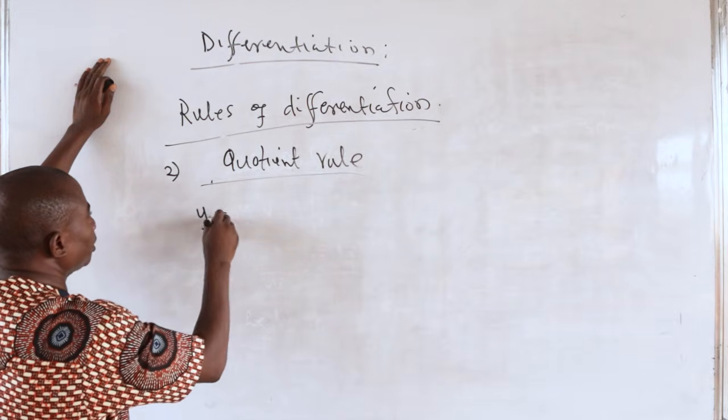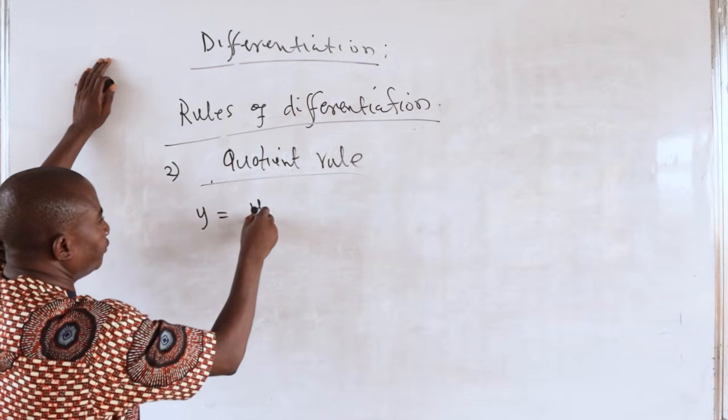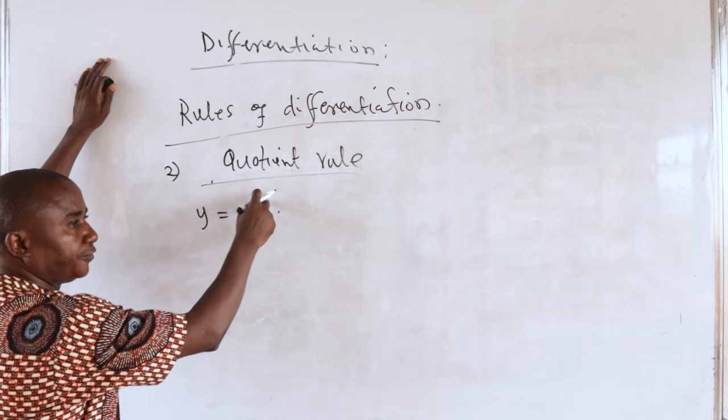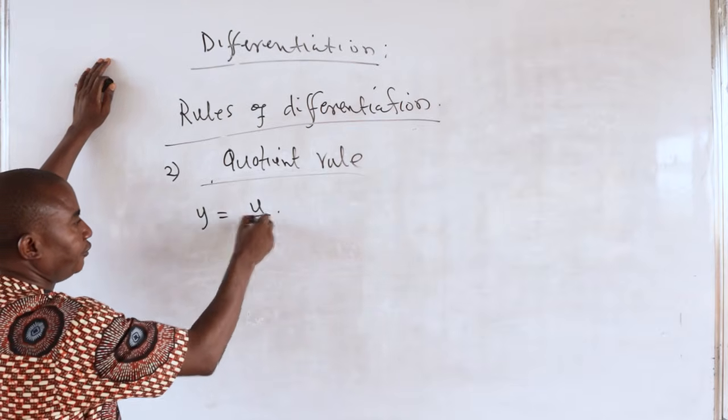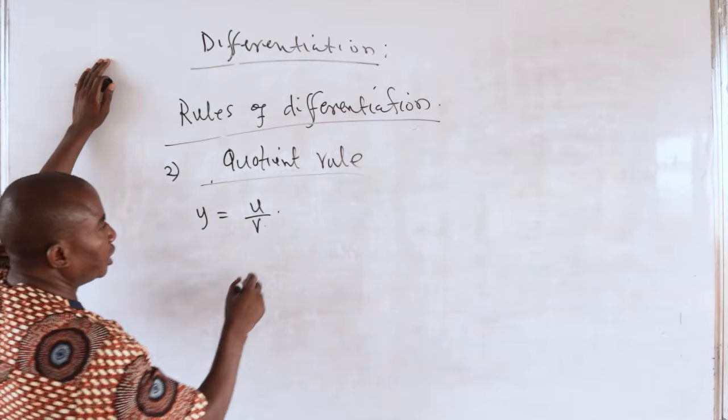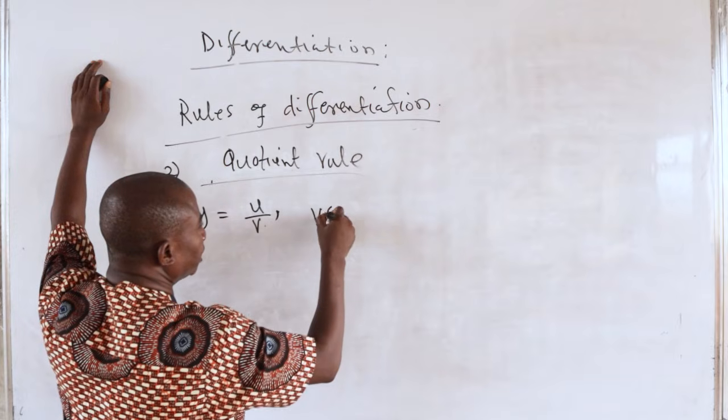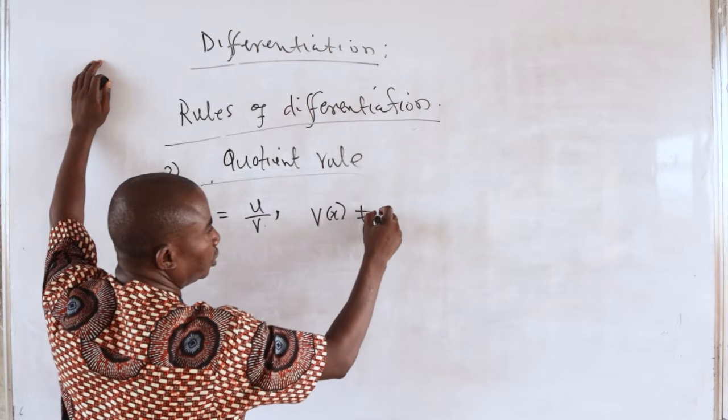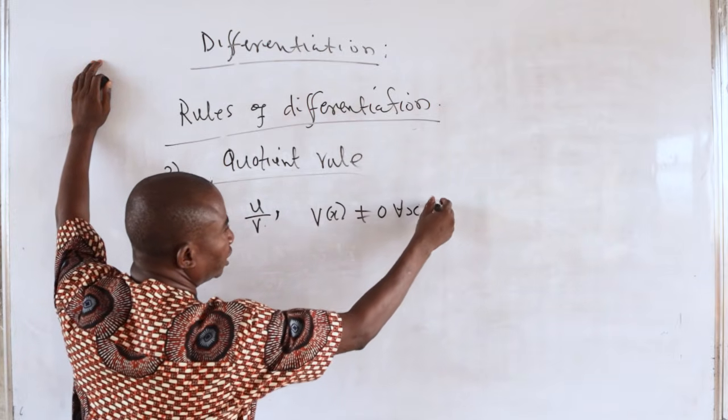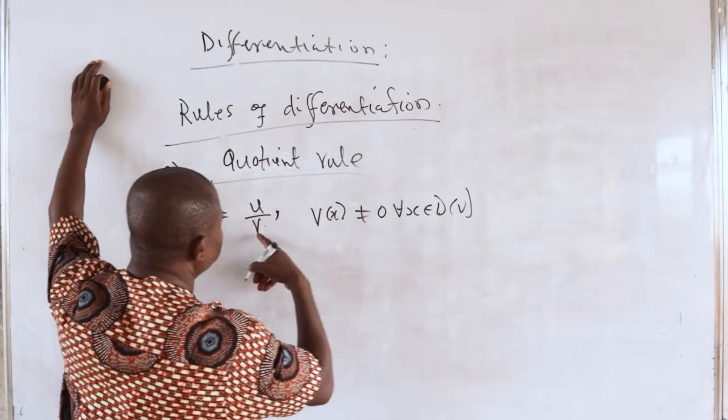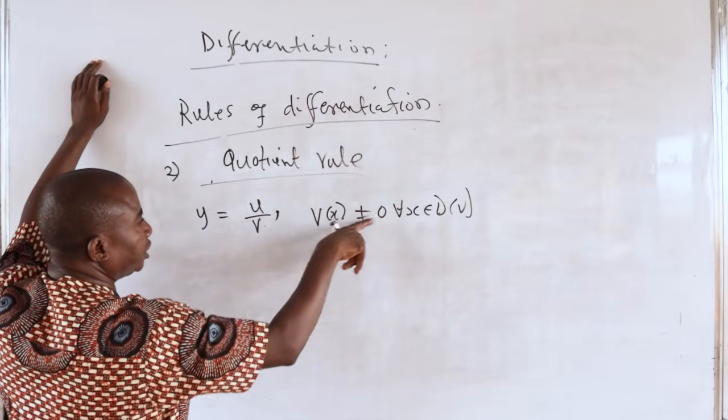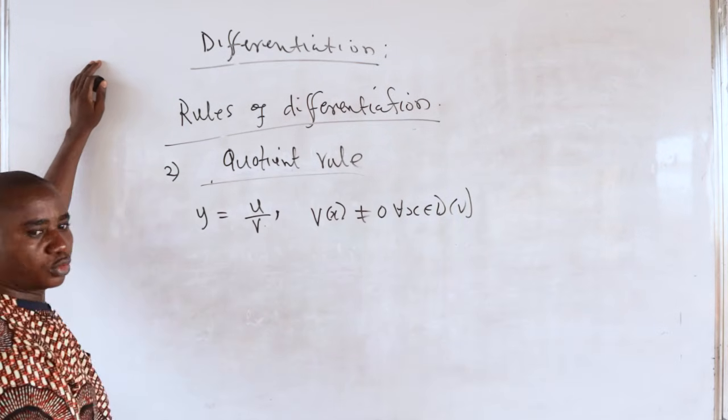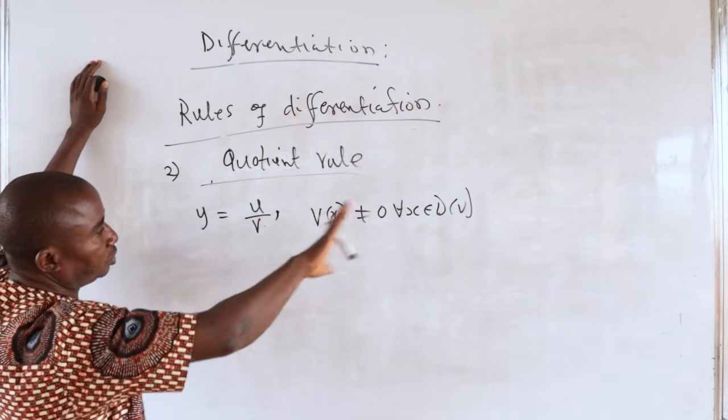If y is equal to u divided by v, where u is a differentiable function of x and v is also a differentiable function of x, with the provision that v of x is not 0 for any x in the domain of v. Because if there is a point for which this is 0, then what we have is indeterminate, so we need to remove that point.